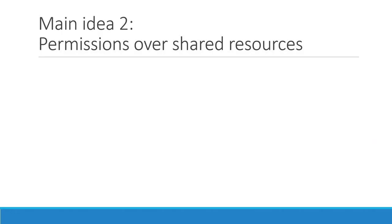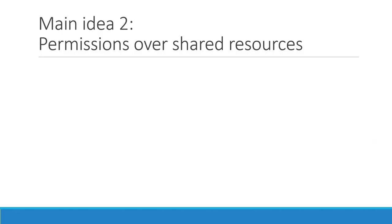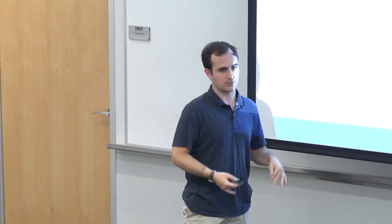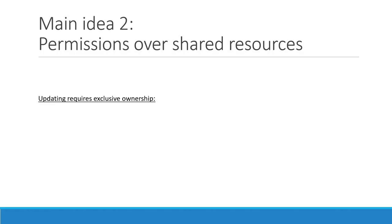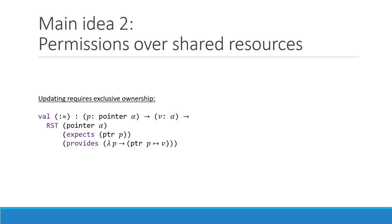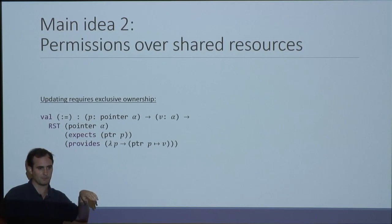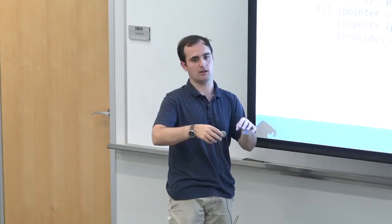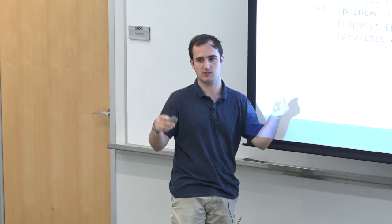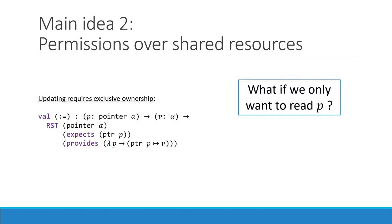So this is the first concept of Steel: we have something that lets you specify functions using separation logic and prove that they respect that specification using the framework. But now, as Amerik mentioned, we want to be able to talk about ownership and what if you want to share data across different actors. Right now, with everything presented, all functions require exclusive ownership. Having the pointer P resource in the context when you call update means you have exclusive ownership over that pointer — because you can't duplicate resources in your context, since the context is a list of disjoint resources.